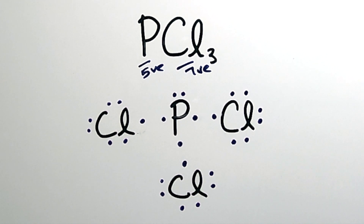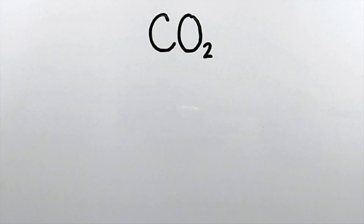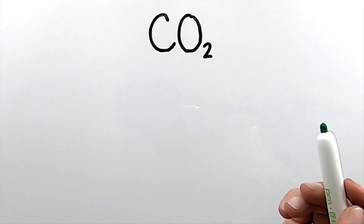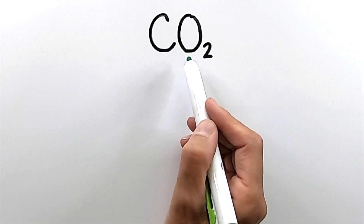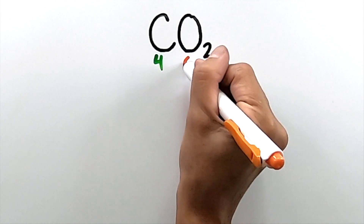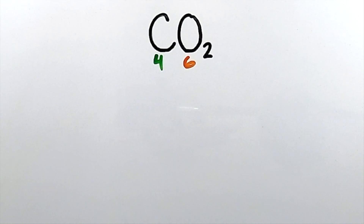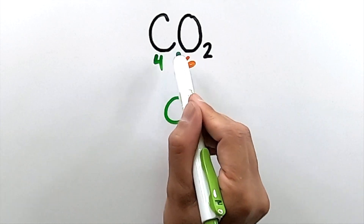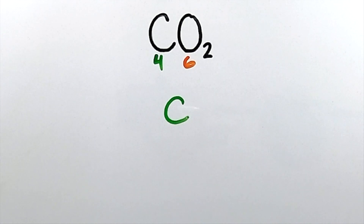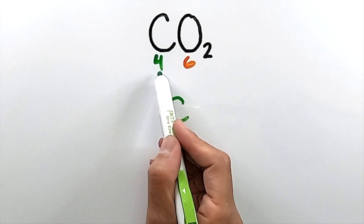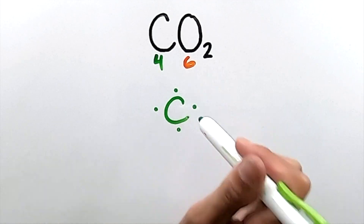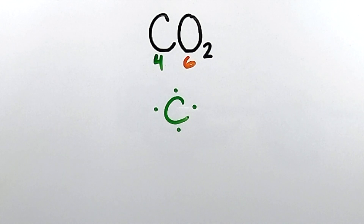Maybe an easier way for you, but that's for you to decide. Let's try another example — carbon dioxide. Just like in the previous example, I'm going to determine the number of valence electrons on each atom. Carbon has four valence electrons, and each of the oxygens have six valence electrons. We'll start by drawing the central atom, carbon, and draw the four valence electrons around it one by one: one, two, three, four. Notice it has four singular electrons.